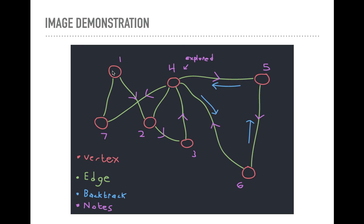Here's an image demonstration. Red circles are vertices, as you might imagine. Green lines are edges. These blue arrows are showing where we backtracked and purple is notes showing the first vertex we visit, the second, and this kind of shows the direction that we've traveled, these little arrows.